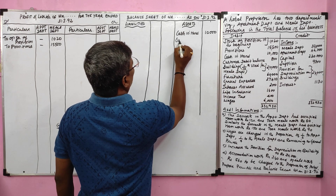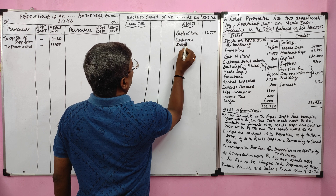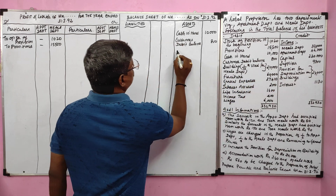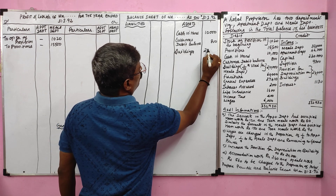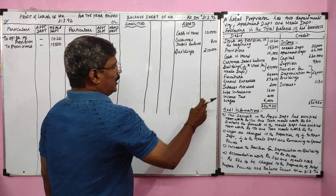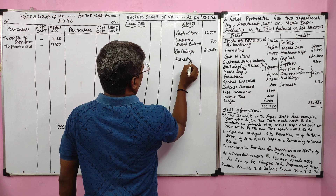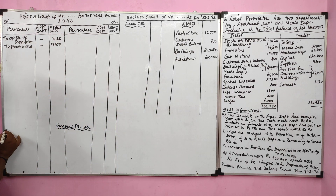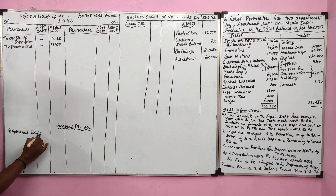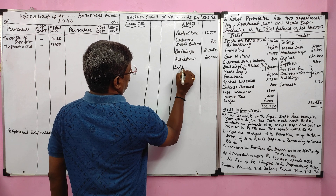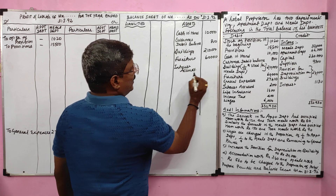Customer debit balance means debtor, value 800. Building value 210,000 — we noted that one tenth is used for the meals department; for placement purposes we can record the building as an asset and ignore the ratio for now. Furniture value 60,000. General expenses are debited to the general profit and loss account, value 27,410. Interest accrued is an asset, value 200 rupees.